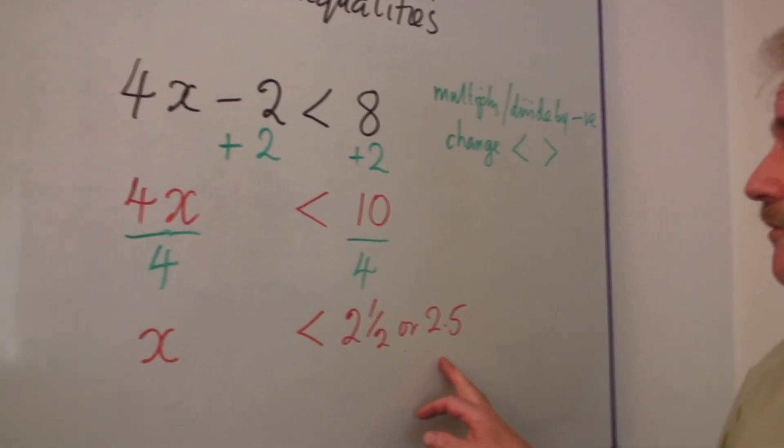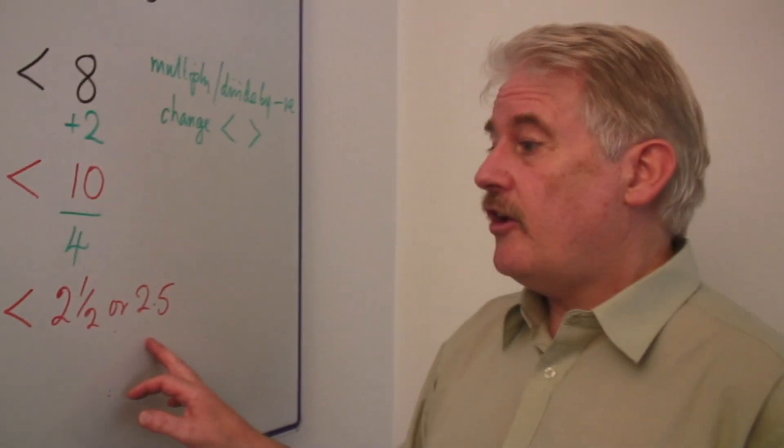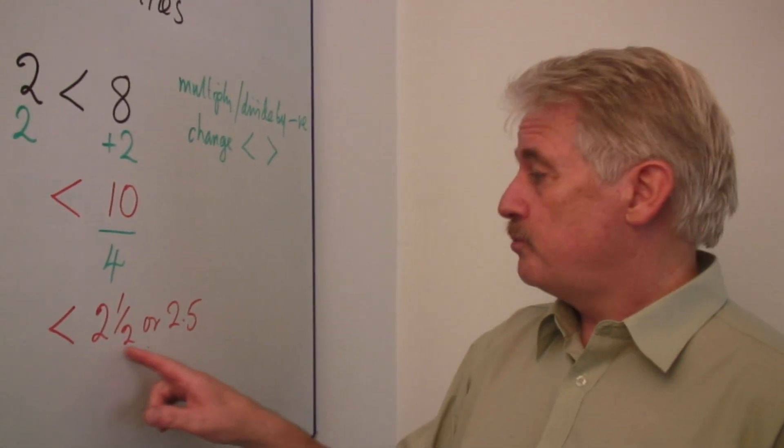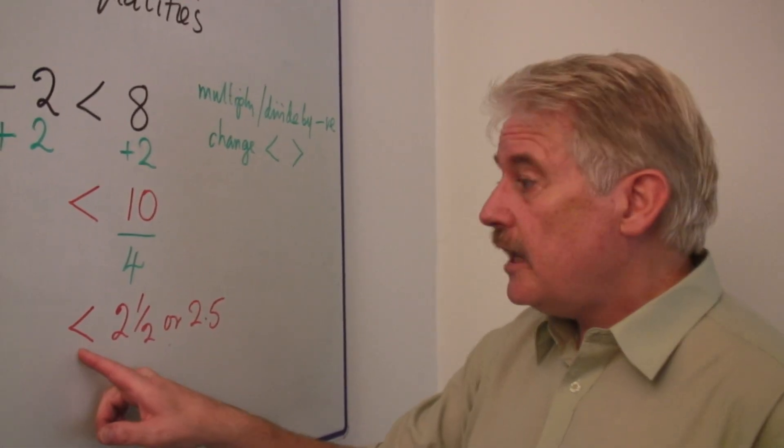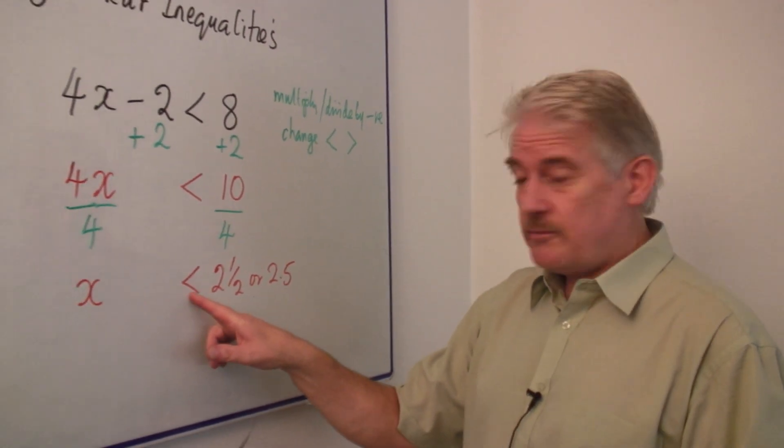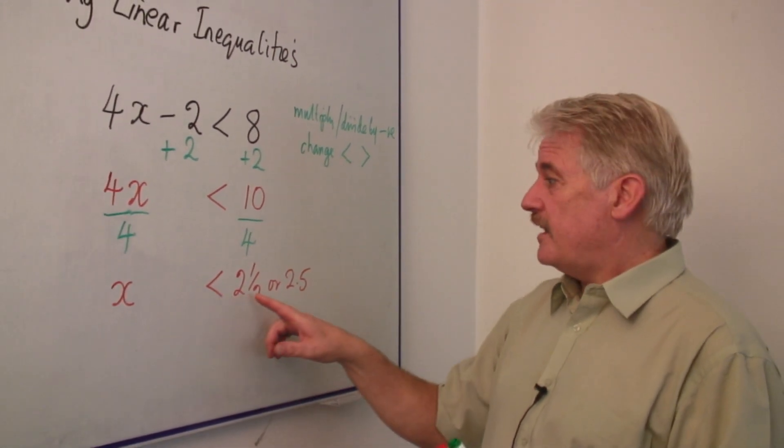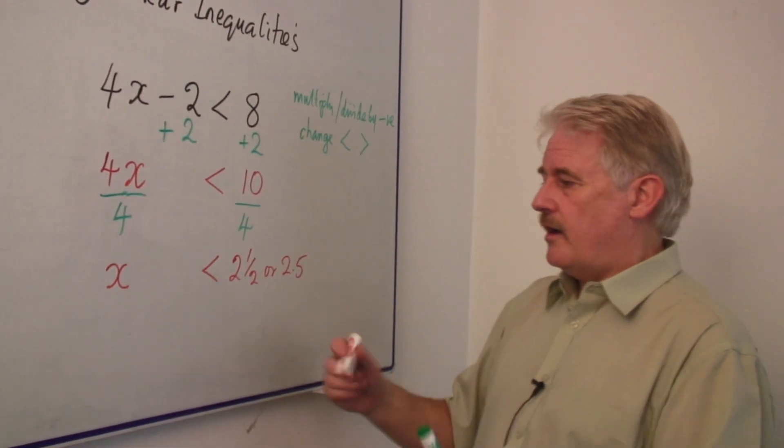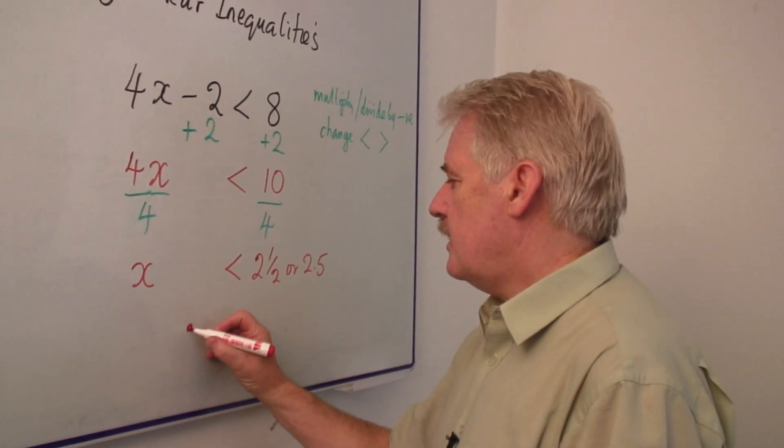So it could be 1. It could be 0. It cannot be 2.5. x is not equal to 2.5. It's less than. So it can't be equal to 2.5 and it can't be 3 or 4 or whatever after that.